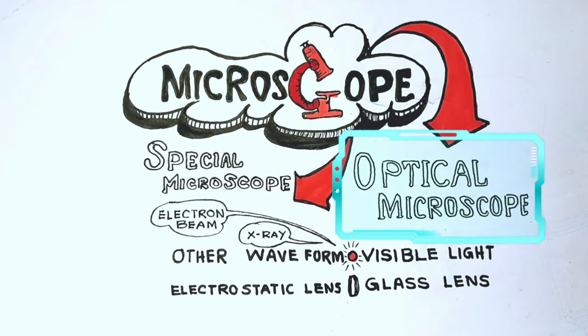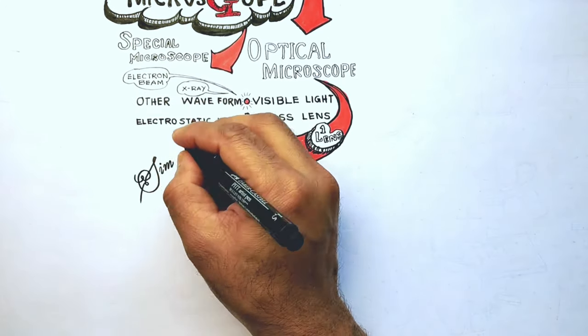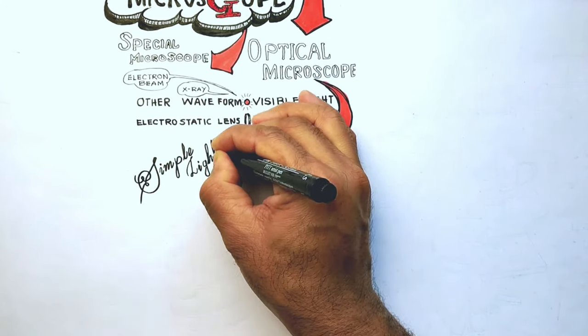Let's focus on today's topic, the optical microscope. Optical microscopes are divided in two types depending on the number of lenses they use.